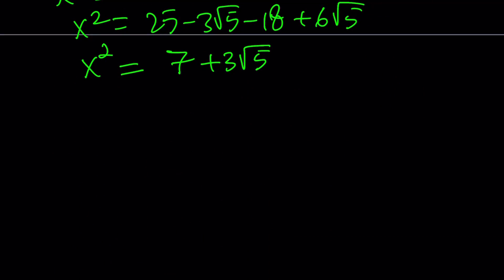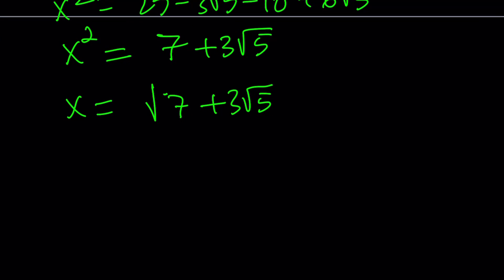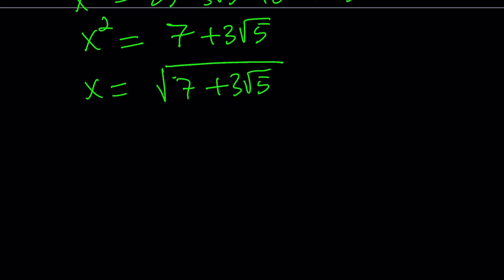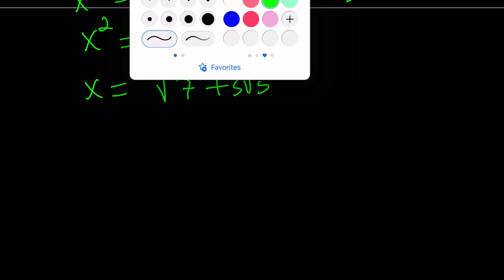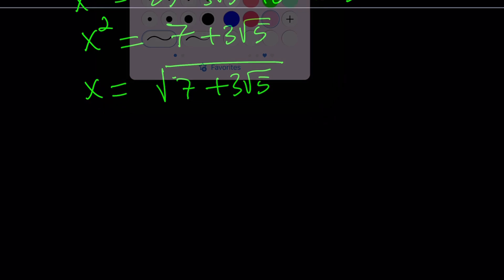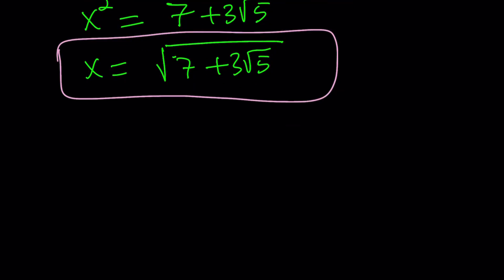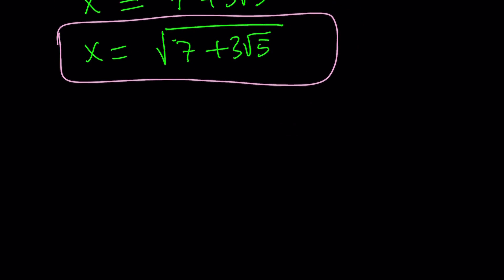Since x is positive, x is going to be the square root of 7 plus 3 root 5. If you just go with the negative square root, you'll notice it doesn't work. So we found the value of x — that's the expression we were looking for.